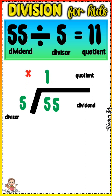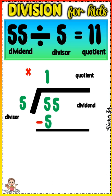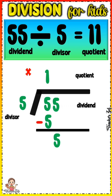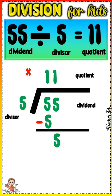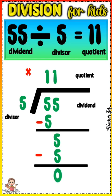55 divided by 5 equals 11. 1 times 5 equals 5. 5 minus 5 equals 0. Bring down 5. 5 divided by 5 equals 1. 1 times 5 equals 5. 5 minus 5 equals 0.